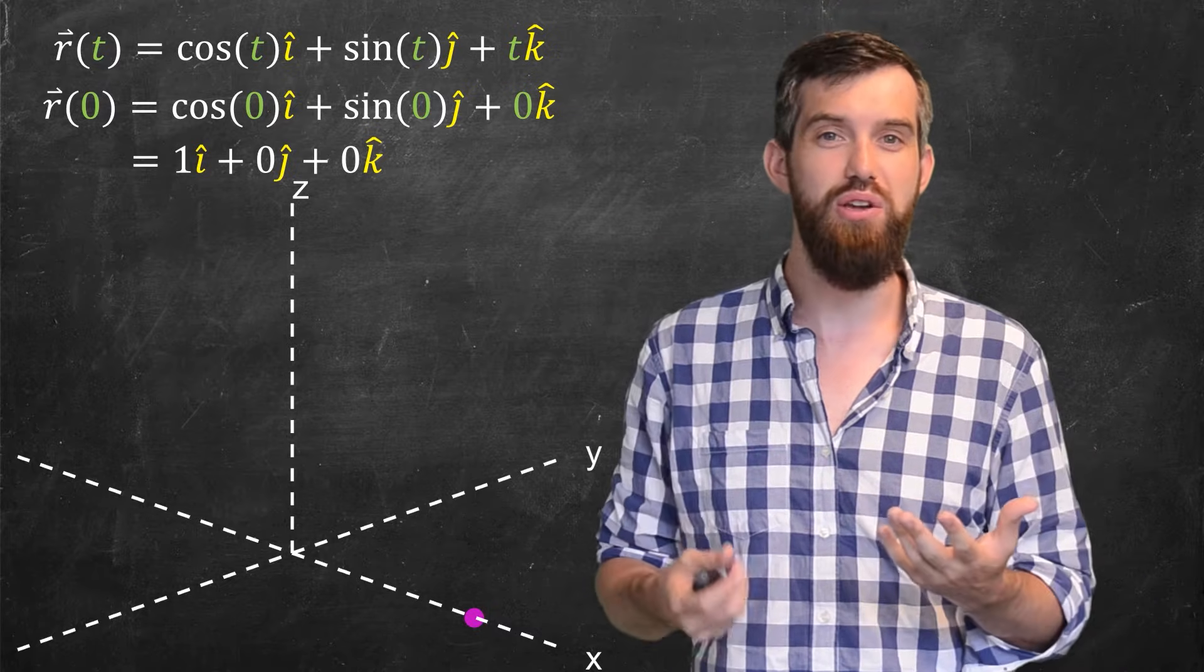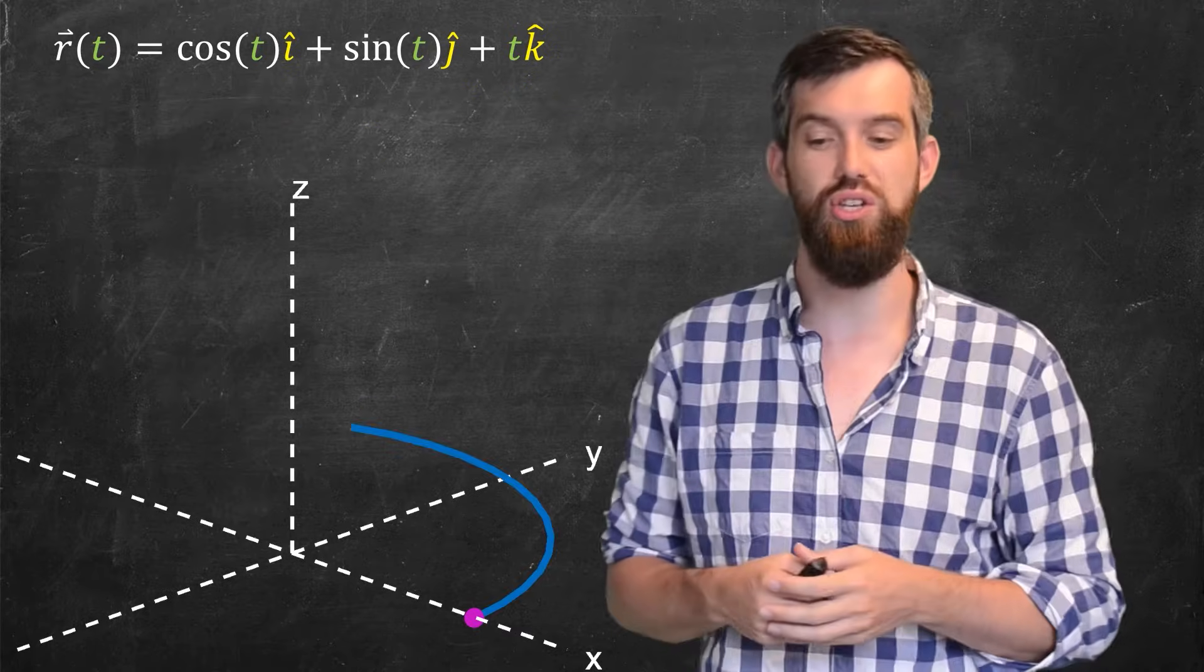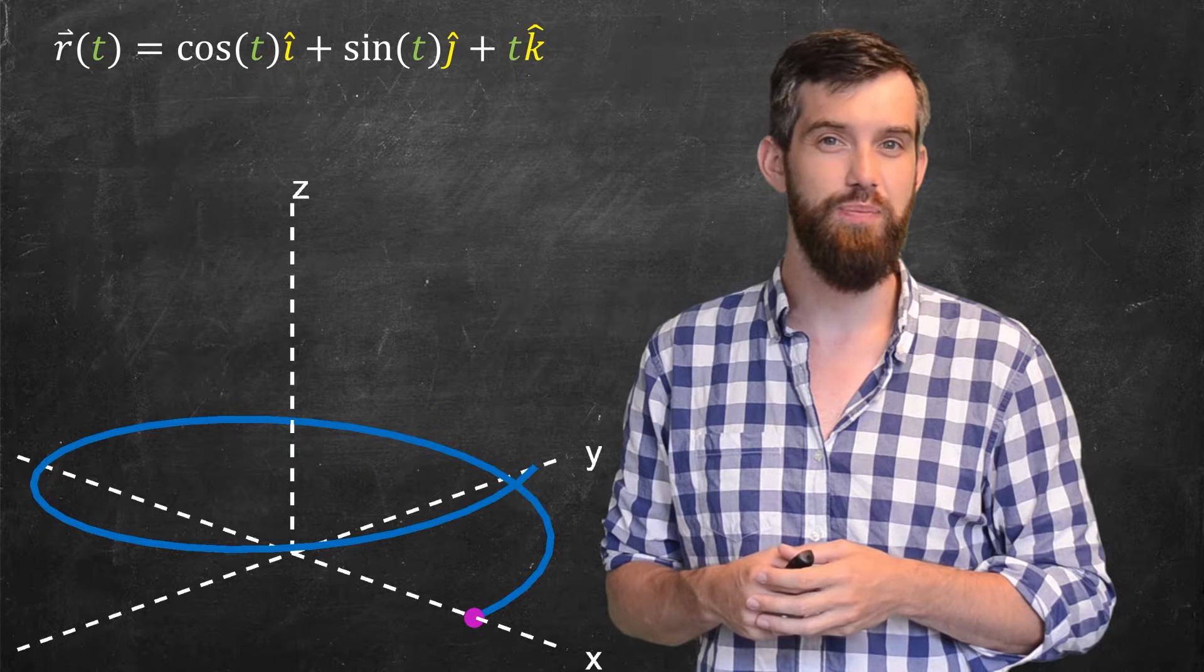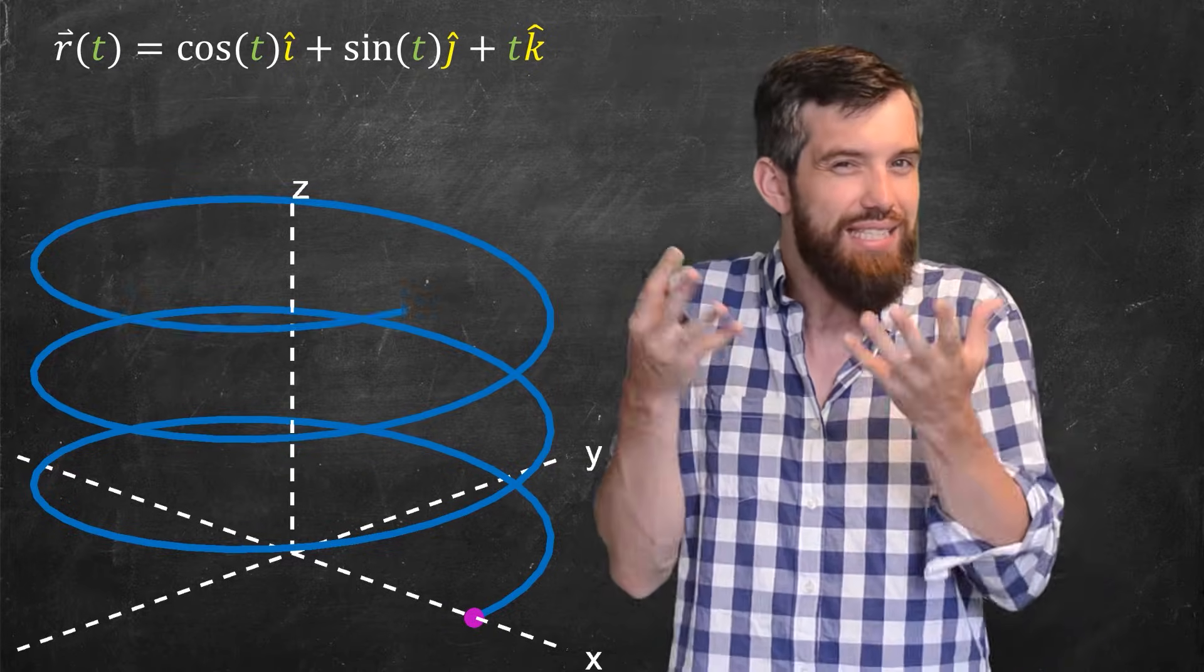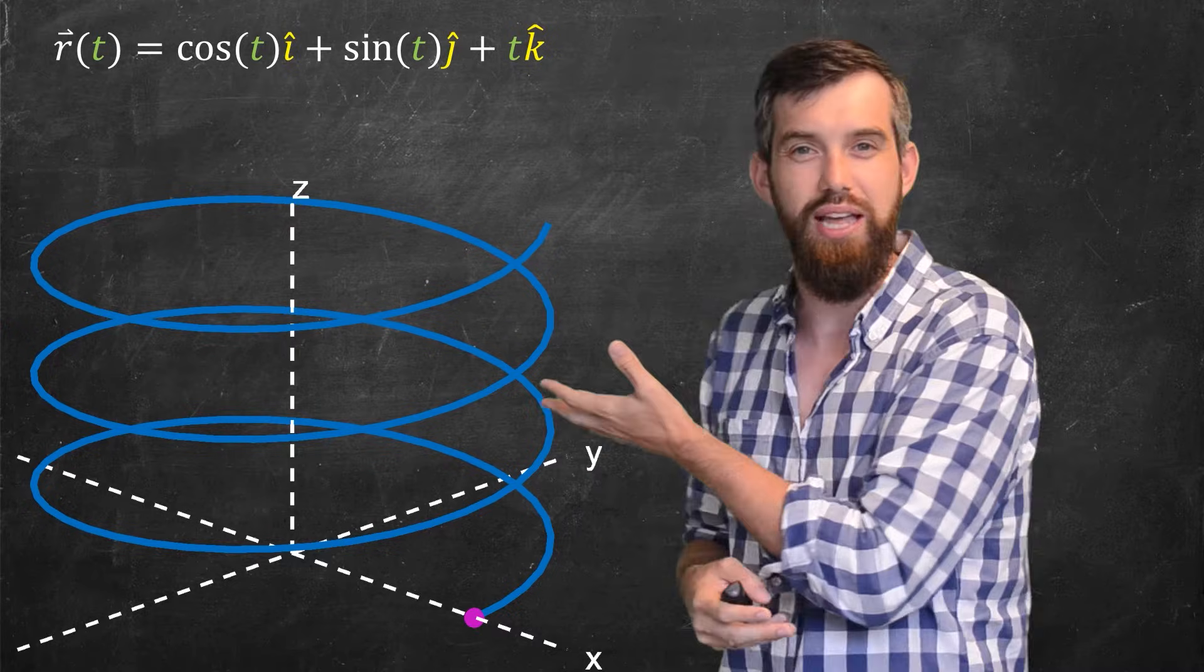Now let me increase my values of t and the computer's going to plot it and it's going to look a little something like this. This is a helix, it's a spiral, and it sort of should make sense that it does in fact look like this.